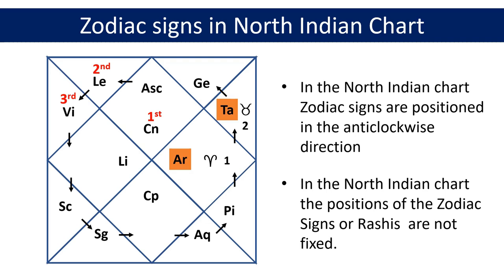Remember that in the North Indian chart the houses are fixed, so these houses will always be in their fixed positions. Going like this we reach the 12th or last zodiac sign Pisces or Mina, which ends up in the 9th house. Once we reach the 12th sign in the zodiac we start from the first sign again, which is Aries or Mesha, and we place it in the 10th house. Continuing on, the 12th sign from where we started — Gemini or Mithuna — is placed in the 12th house. This is how the zodiac signs or Rashis are placed in the North Indian chart starting from the sign of the Ascendant.